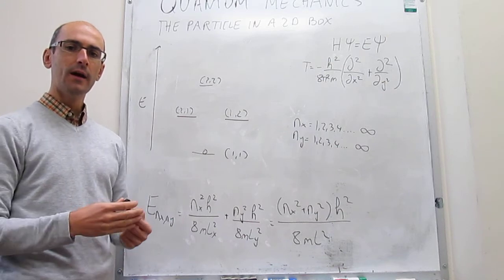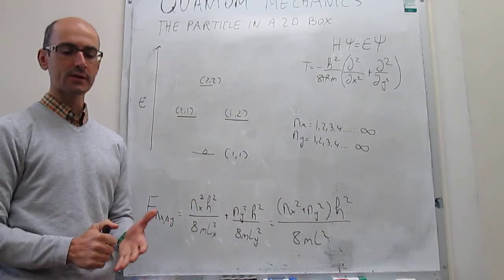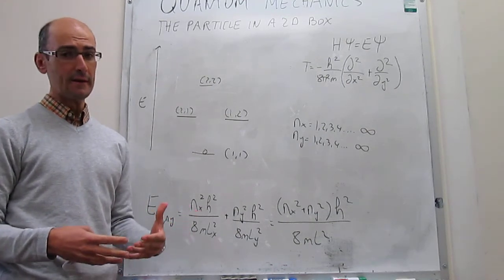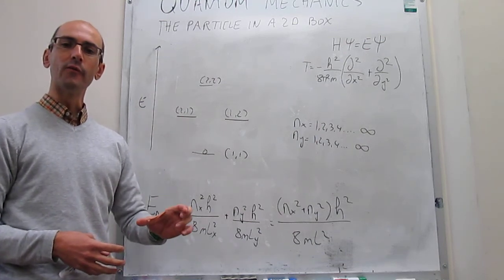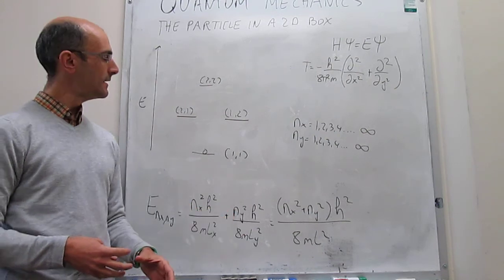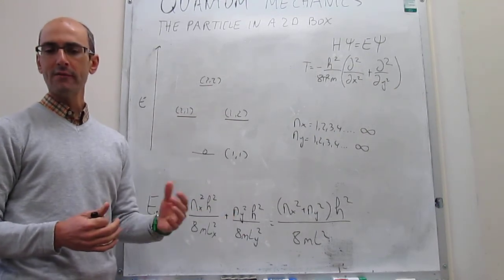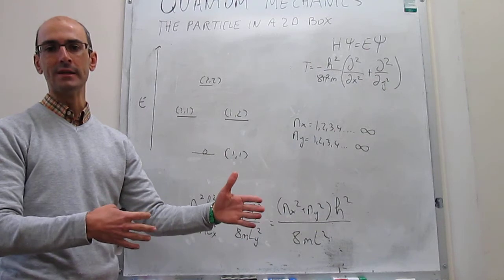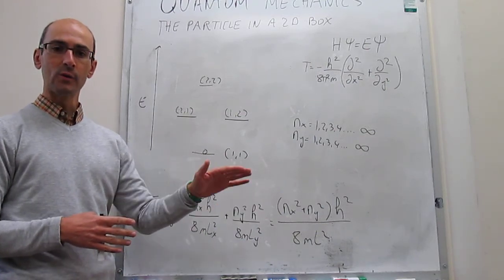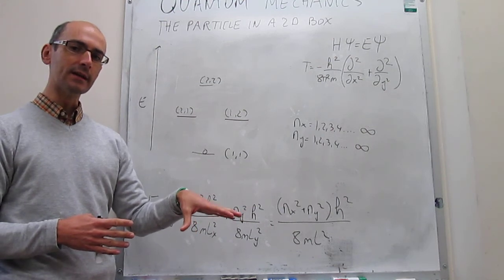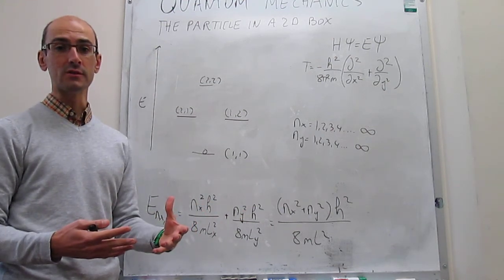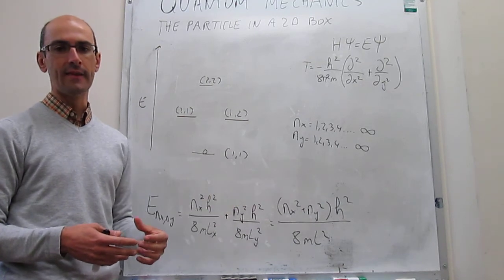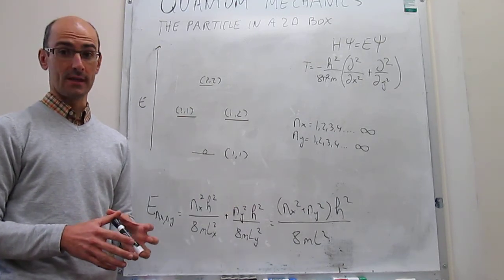Here we have illustrated how the particle in a 2D box model works. We have looked at the wave function and energy solutions, and we have introduced the concept of degeneracy. Important things to recognize are that the number of quantum numbers increases with the number of dimensions, and that energy states can be degenerate. In the description of this video below, you will find a link to see the probability distributions — the modulus squared of the wave functions — on an external webpage.